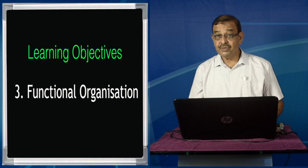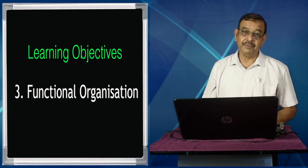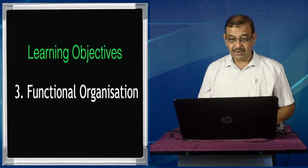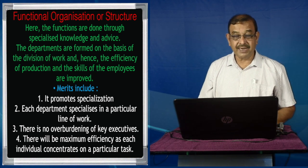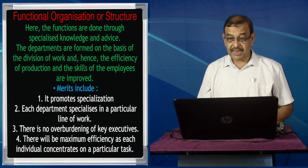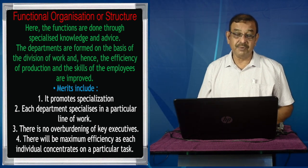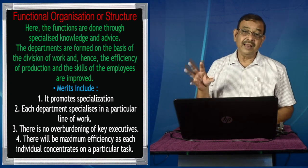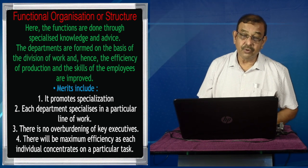The third type is functional organization or structure, which is very common in today's organizations. We see marketing departments, finance departments, loan departments, HR departments, production departments, and so on. Here, functions are carried out through specialized knowledge — the marketing specialist knows about marketing, the financial manager knows about finance. Departments are formed on the basis of division of work, and the efficiency and skills of employees are improved. For example, someone who starts as a sales supervisor can become sales manager, then area manager, and eventually DGM marketing. Marketing persons will do marketing activities only; production people will do production activities only.